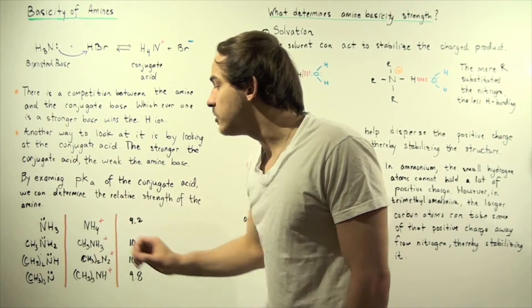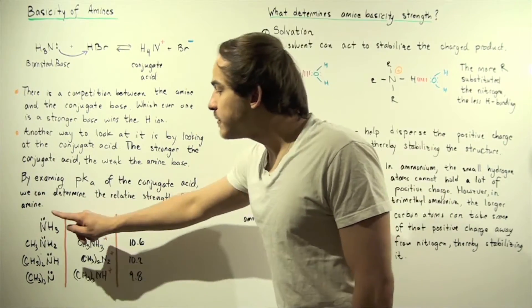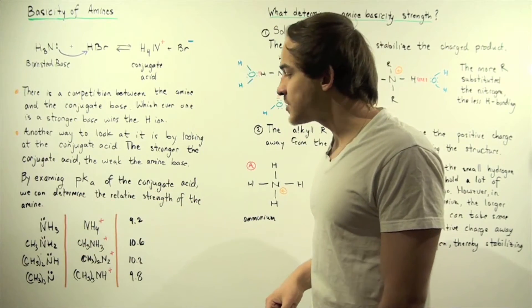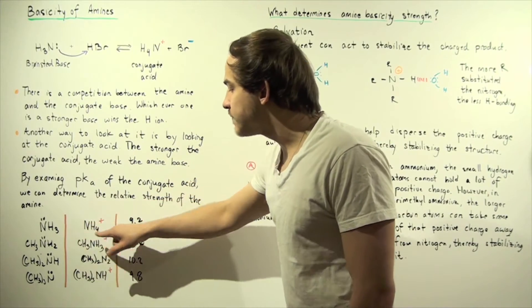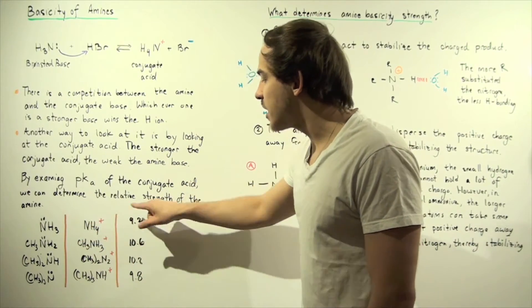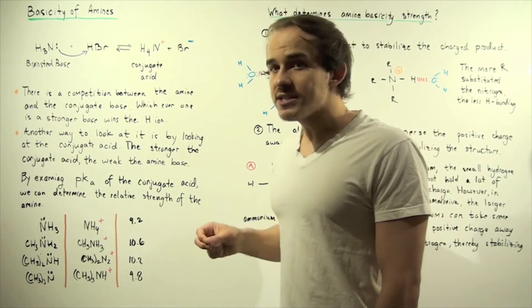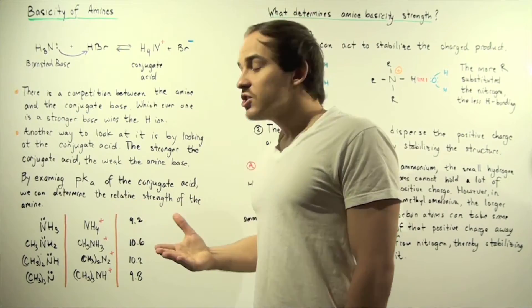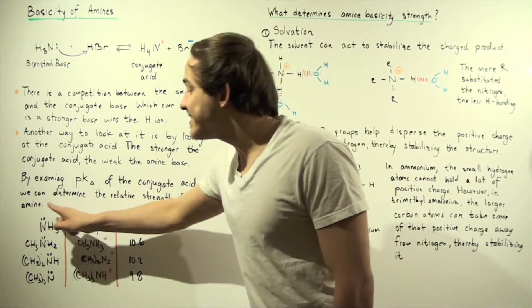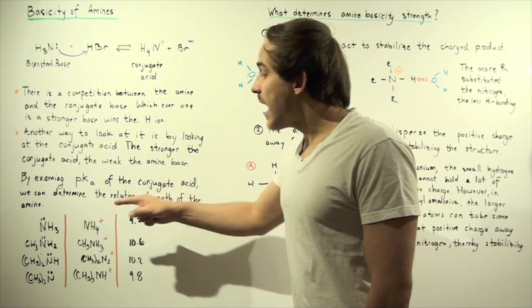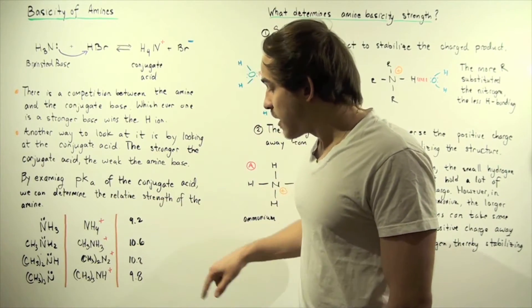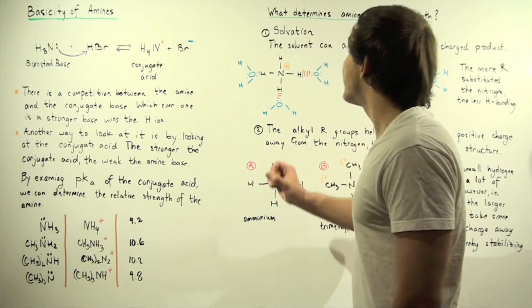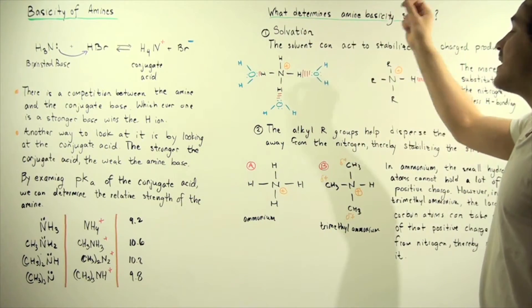Let's look at the following table. We have four amines that increase in the number of alkyl groups attached to the nitrogen atom, along with their respective conjugate acids and pKa values. Notice that as we go from one to two to three alkyl groups, the pKa increases — acidity decreases and basicity increases. However, when we go to the last one, the pKa drops from 10.8 to 9.8. So what determines amine basicity strength?